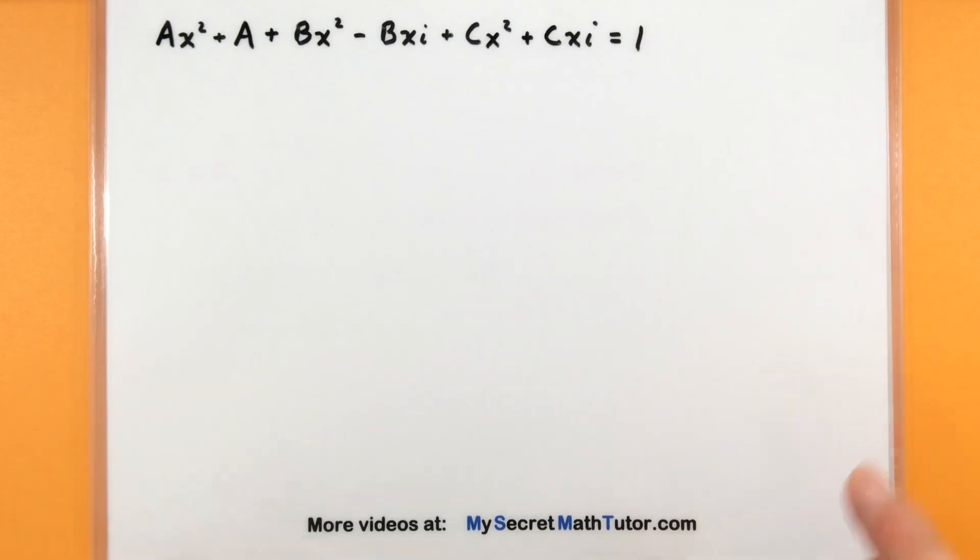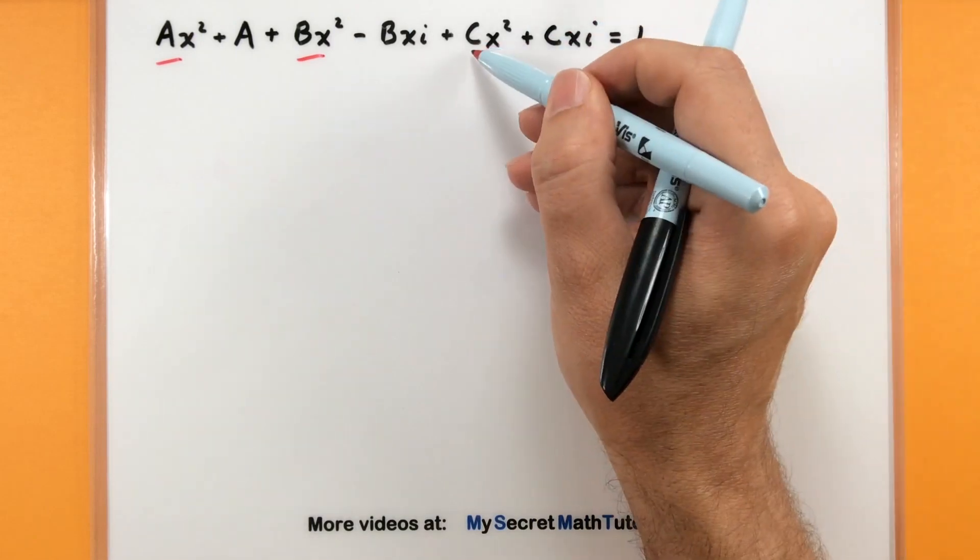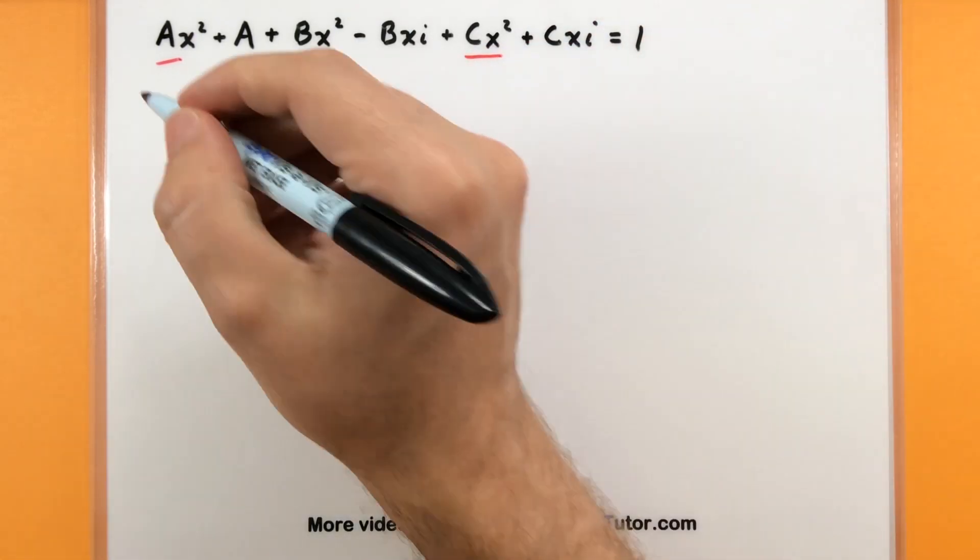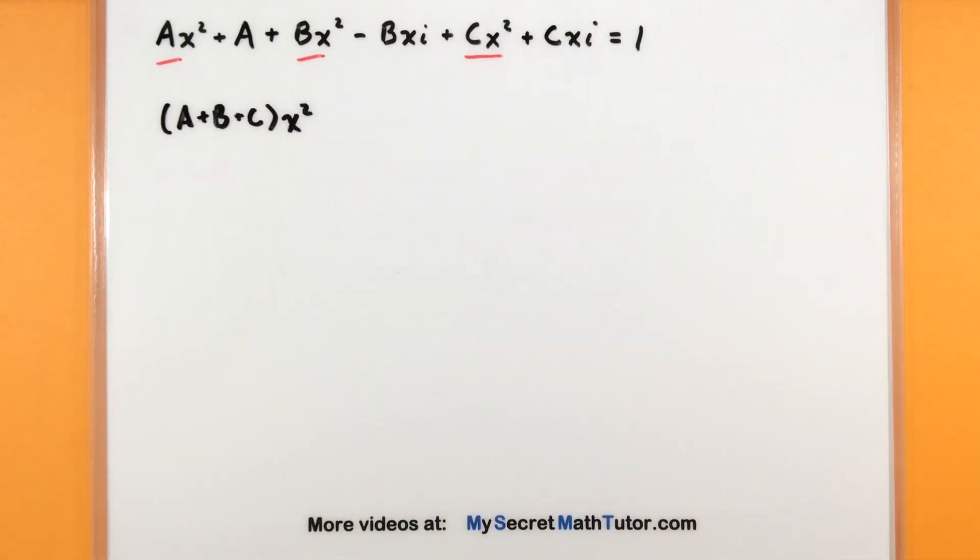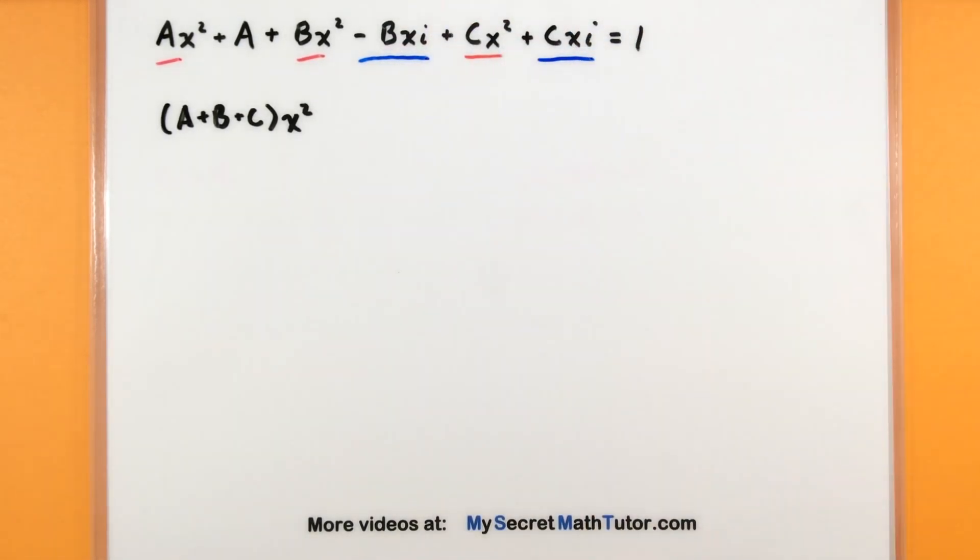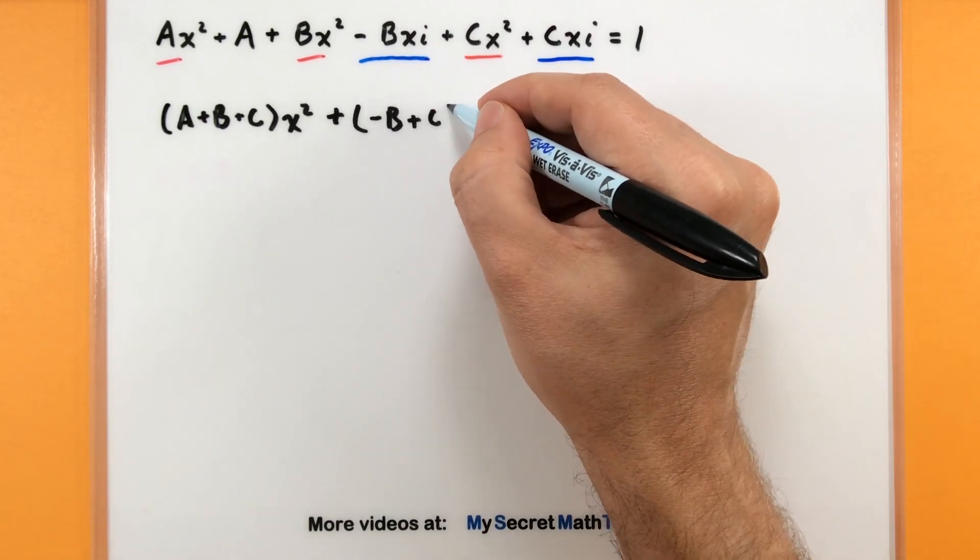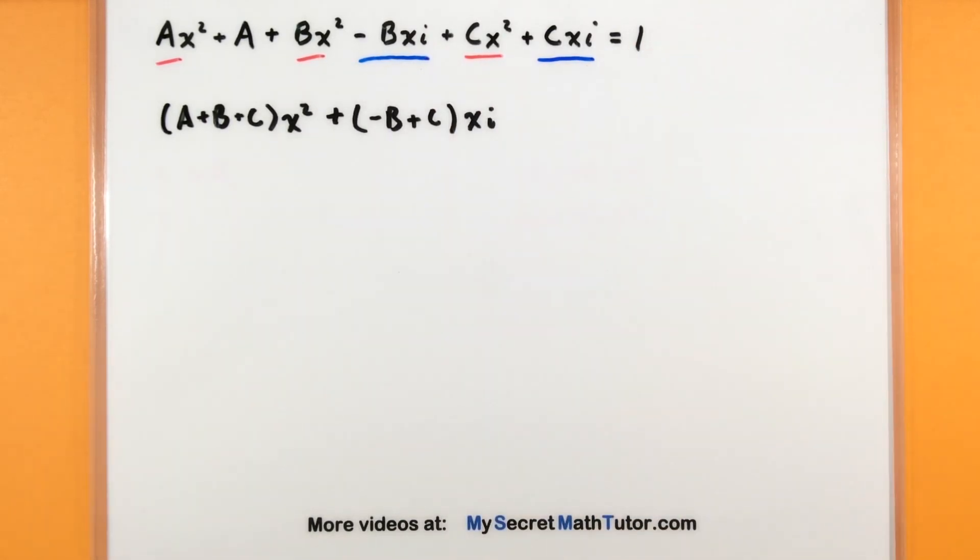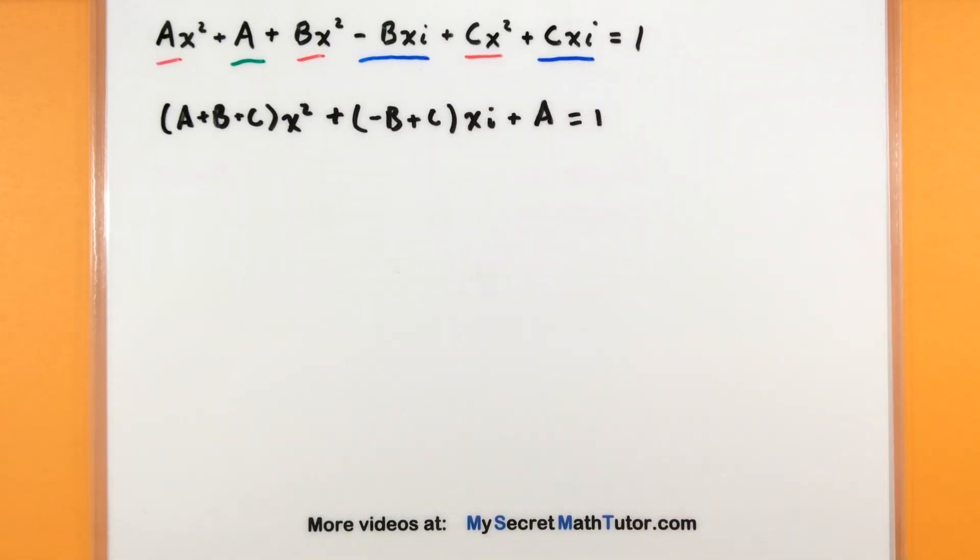Now the big part is remembering that the left side is equal to the right side. So what we're going to do is we're going to collect together all of our terms that involve this x squared. We have ax squared, bx squared, and cx squared. So this is another way of saying that a plus b plus c, all of those are associated with x squared. Looks like we have some xi terms. So we could combine those together. This would give us negative b plus c. Those are associated with xi. And it looks like the last term we have here on the left side is just an a. All that is still equal to one.